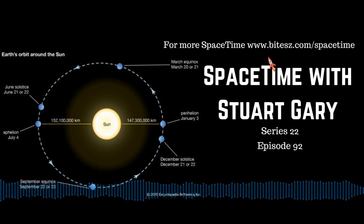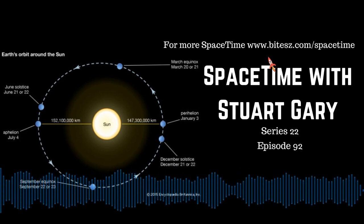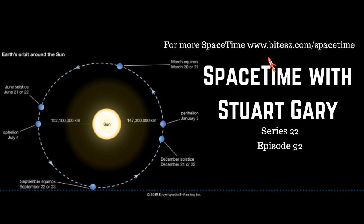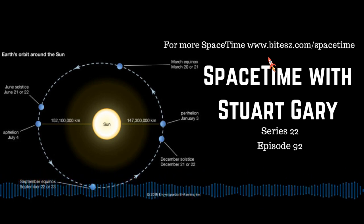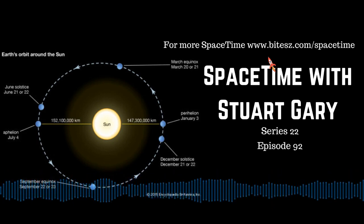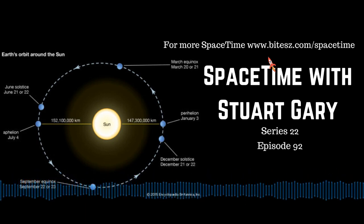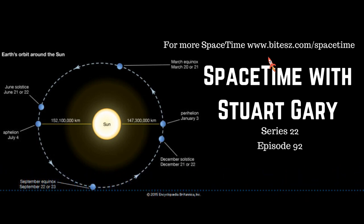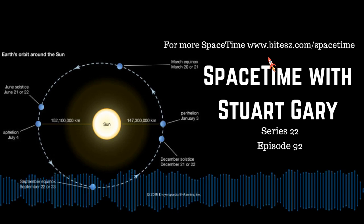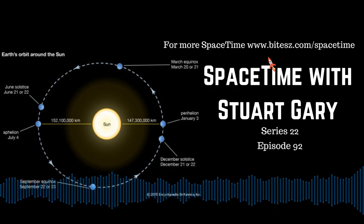One of the astronomical highlights of December is the annual Geminids meteor shower, which is peaking around now. Radiating out from the direction of the constellation Gemini, the Geminids are unusual in that they're not generated by a comet as most other meteor showers are, but are produced by the debris trail left behind by the asteroid 3200 Phaeton. This makes the Geminids, together with the Quadrantids, the only major meteor showers not originating from a comet.